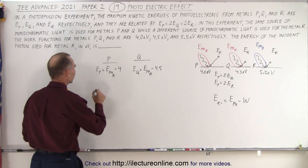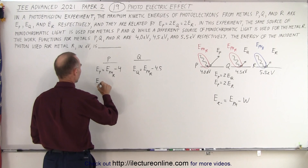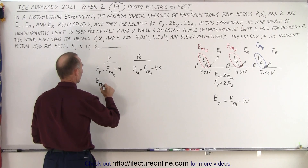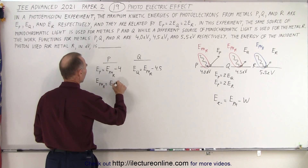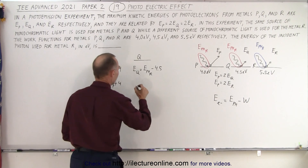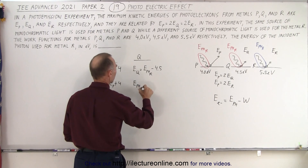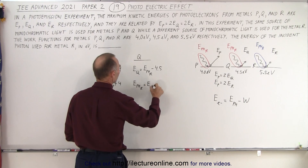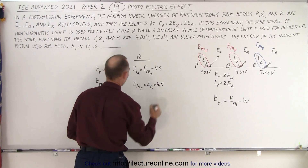Rearranging: E_photon_red = E_p + 4, and also E_photon_red = E_q + 4.5. We can use the known relationship between E_p and E_q to solve these.